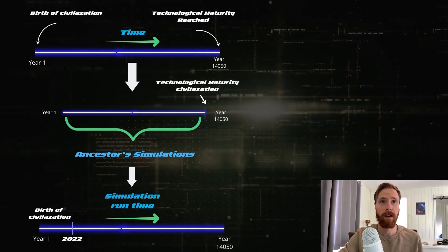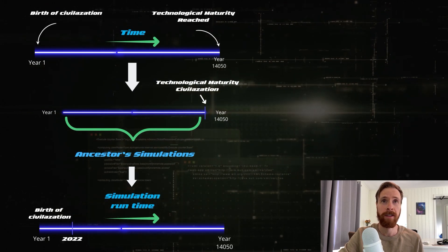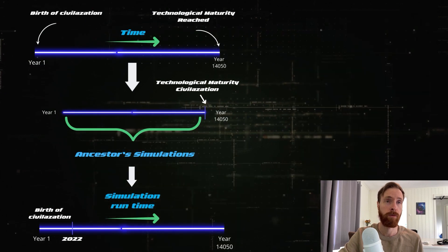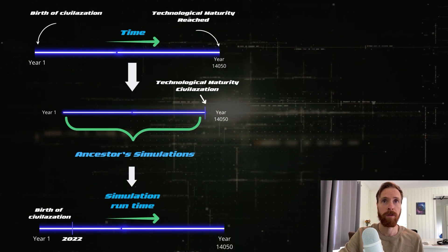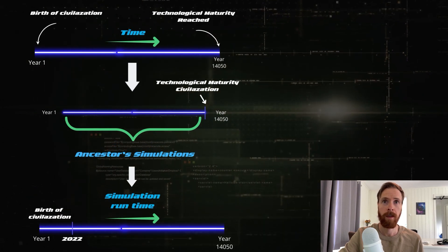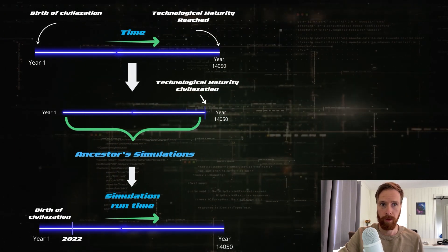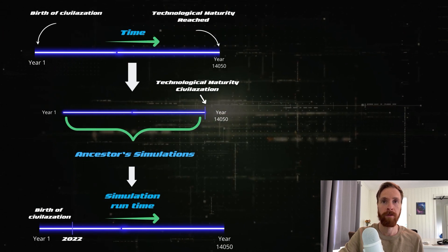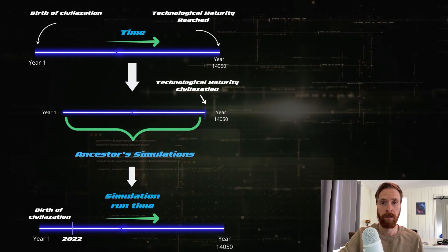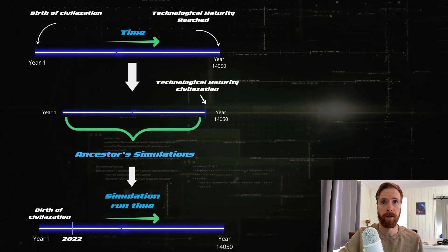Okay, so I tried to make a graphical explanation of this. So we start on top here, like you see the birth of a civilization was year one and time goes on and they reach technological maturity in year 14,050. So then they can approach to the next level which is starting to simulate all of the years and the people who had died and all of their ancestors previously to this year.